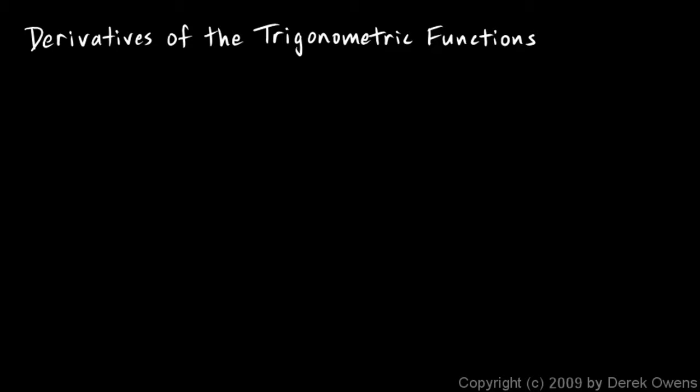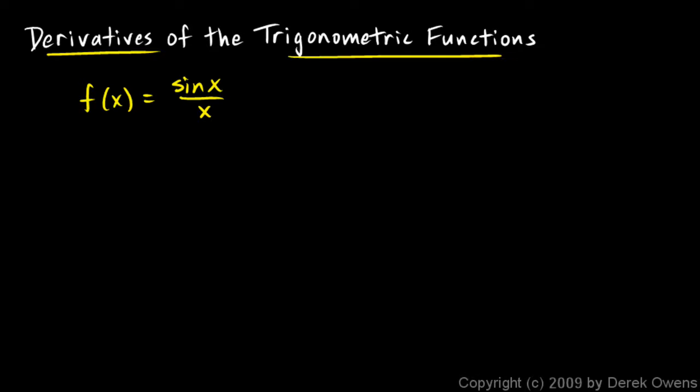Now it's time to talk about the derivatives of the trig functions. We will be differentiating the sine function, the cosine function, the tangent function, and also the secant, cosecant, and cotangent functions. To do this we need to first take a look at the function f(x) = sin(x)/x. We're going to look at this and get a result that will be useful for finding the derivatives of the trig functions — just to lay a little foundation.